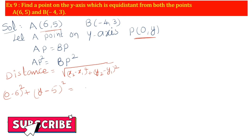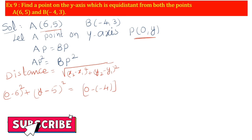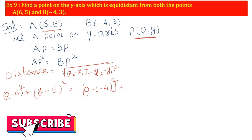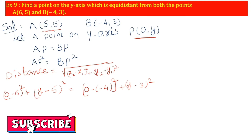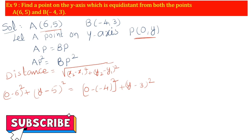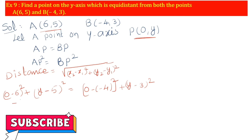Setting AP² equal to BP²: (0 - 6)² + (y - 5)² = (0 - (-4))² + (y - 3)². So: (-6)² + (y - 5)² = (4)² + (y - 3)².